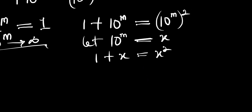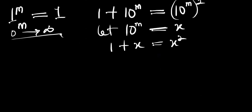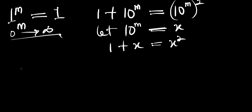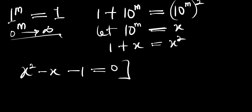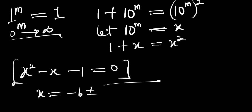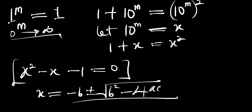From here we rearrange and get x squared minus x minus 1 equals 0. We have to solve this quadratic equation, so let's use the formula method: x equals negative b plus or minus the square root of b squared minus 4ac, all divided by 2a.